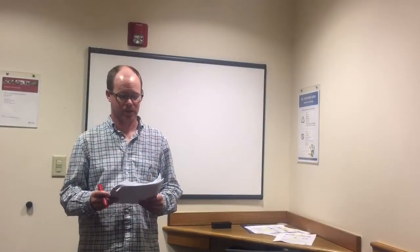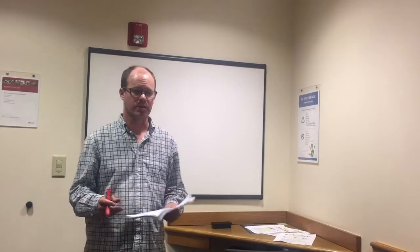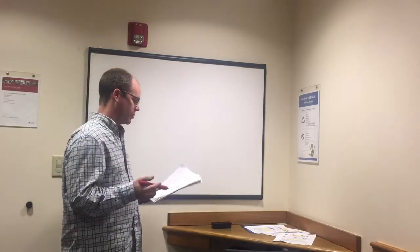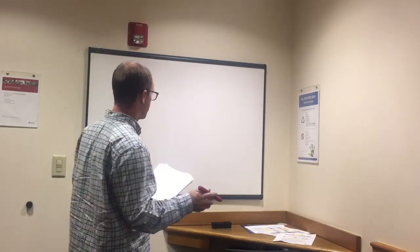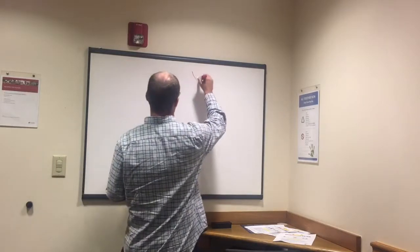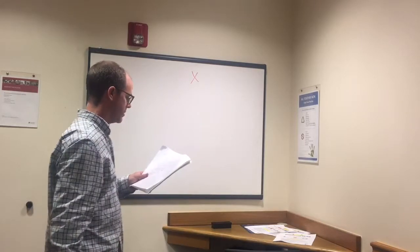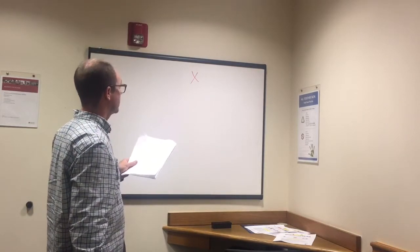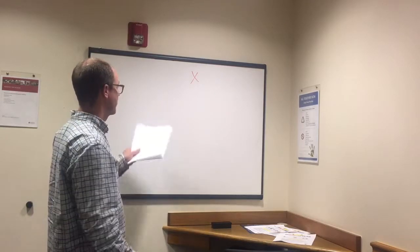We're going to look at polynomials here. First we need some terminology down. A monomial means one - mono means one - and an example of a monomial would be x. X by itself would be a monomial, one term. 5x also would be a monomial.